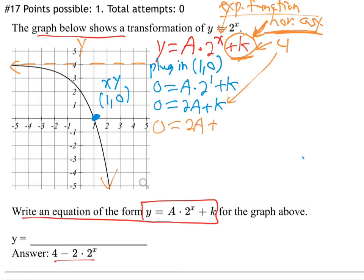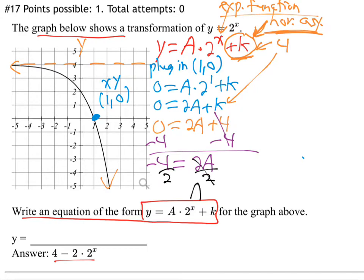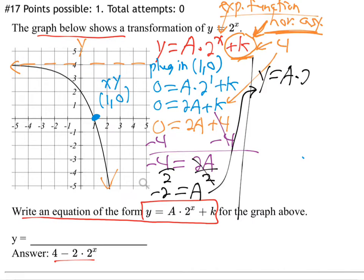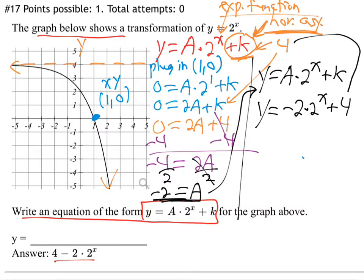So we have 0 equals 2a plus 4. Now we can solve for a. Subtract 4 from both sides: 2a must equal negative 4. Divide by 2 — a must be negative 2. So our equation is y equals a times 2 to the x plus k, where a is negative 2 and k is 4.